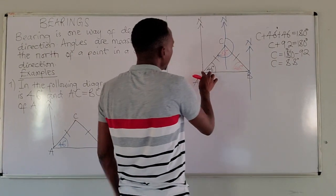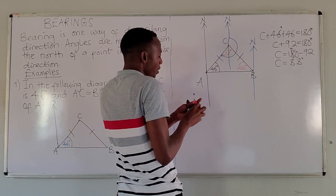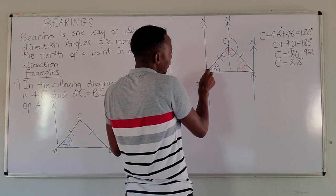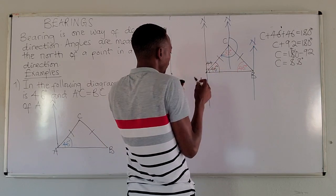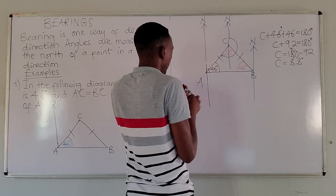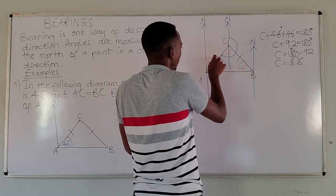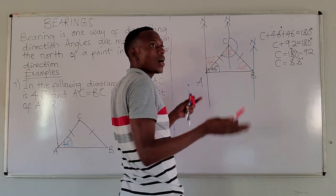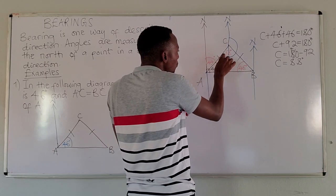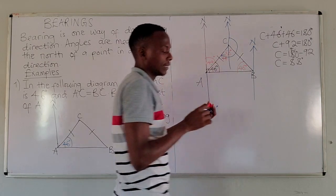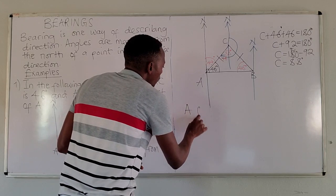Since B is due east of A, we will have a 90 degree angle here. It's at 46. From 90 degrees, we are going to have 44 degrees here. Using alternate angles, this is 44 and even here there is 44 degrees.